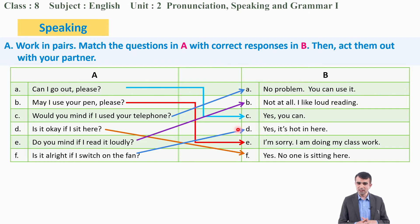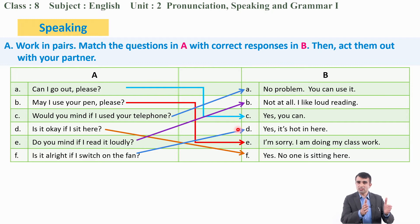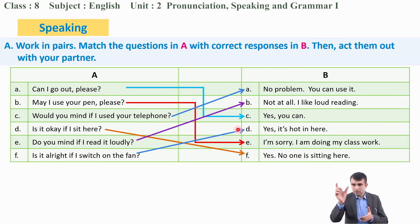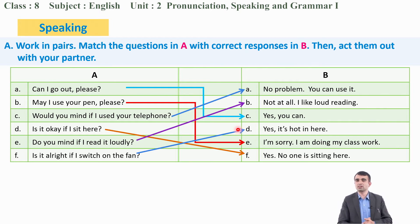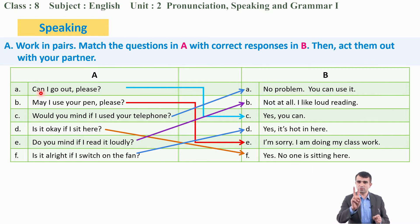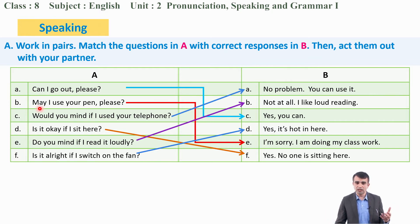The questions under column A are questions to ask for permission. The responses under column B are either to grant permission or withhold permission. Now work in pairs: one student says 'Can I go out, please?' and the other says 'Yes, you can.' Then, 'May I use your pen, please?' and the response is 'I'm sorry, I'm doing my classwork.'